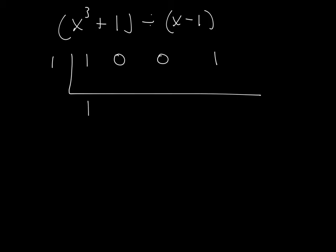Okay, here we go. So just drop down the 1. Multiply these two numbers together right here, and you'll get 1. Add them, you get 1. Multiply, 1 times 1 is 1. Add them, you get 1. Multiply them, you get 1. Add them, you get 2.